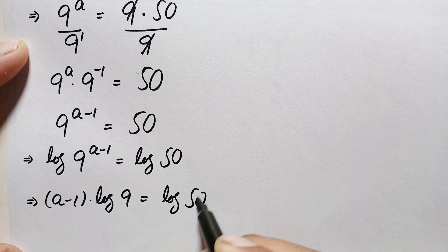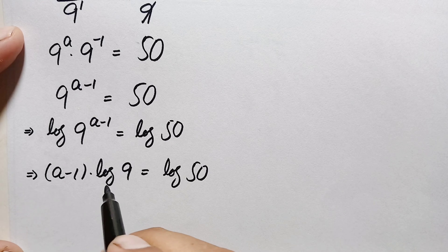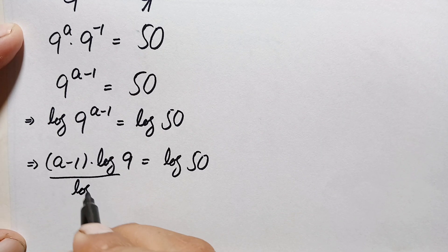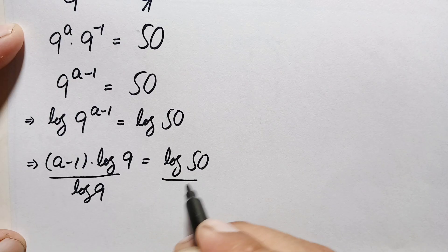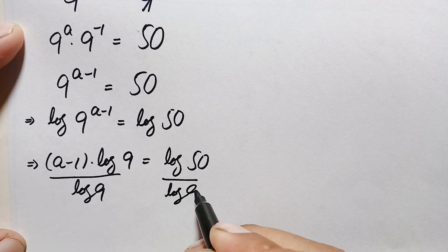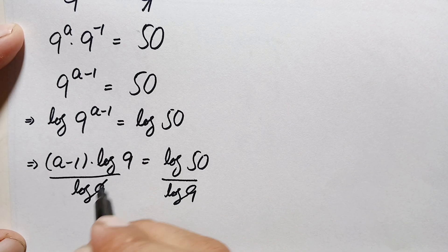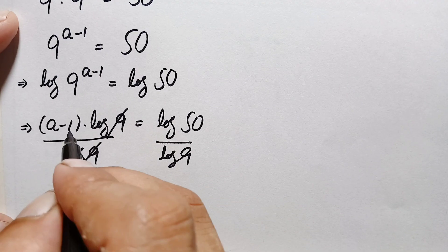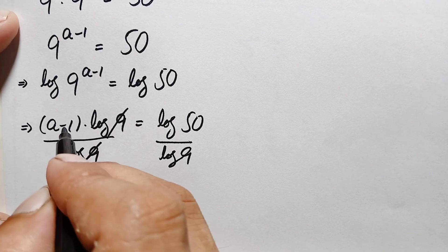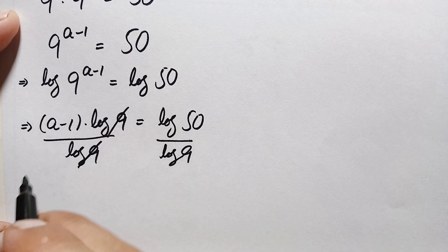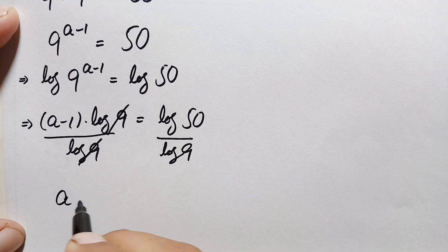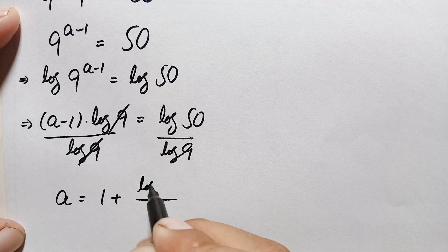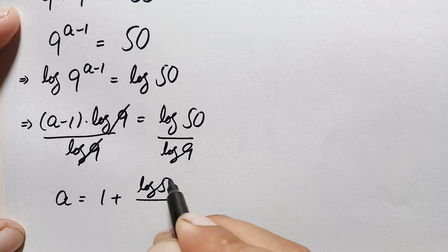We divide both sides by log(9), so log(9) cancels on the left hand side, leaving a−1 = log(50) / log(9). Then we move the −1 to the right hand side, making it positive, so a = 1 + log(50) / log(9).